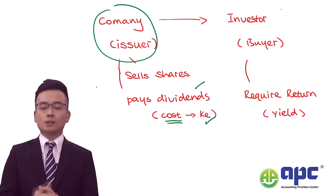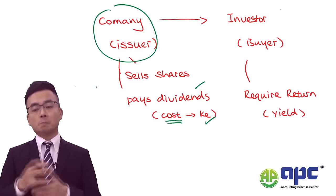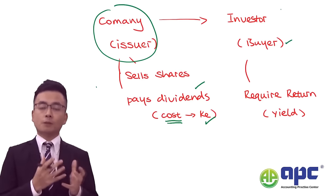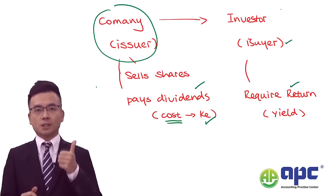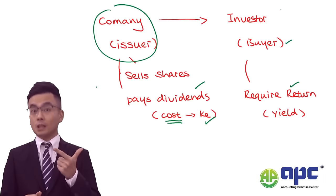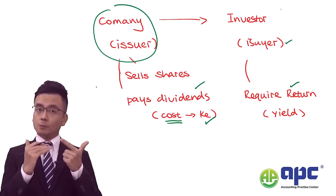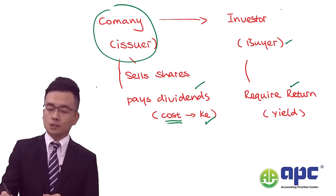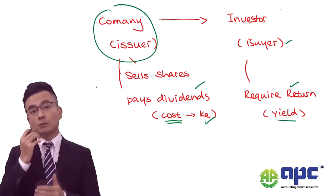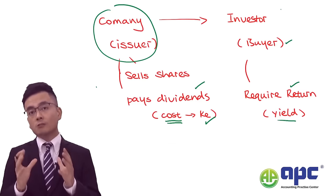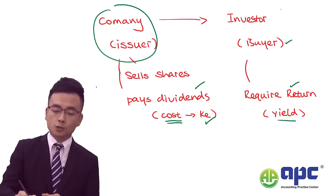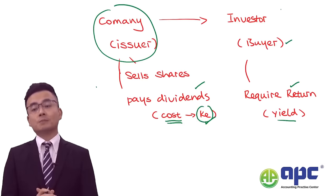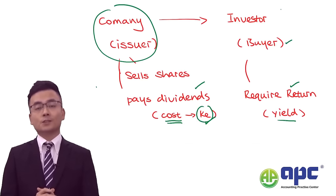On the flip side, the investor is called the buyer, buying shares from the issuer, and the buyer will require a return from the company — for example, in the form of dividend or capital gain, buying shares at a low price expecting to sell at a higher price later on. To the investor, this is called yield. From the exam's point of view, we are required to calculate the cost of equity from the issuer's perspective, which is the same as the yield from the investor's point of view.